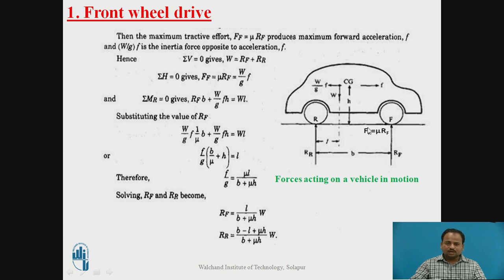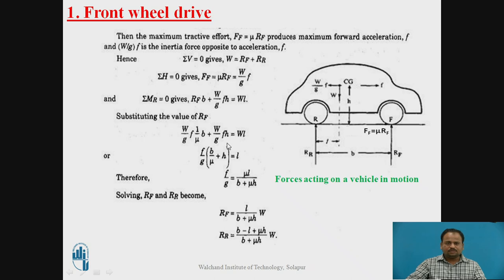As we are dealing with the front wheel, we need to take the moment about the rear wheel. Therefore, taking moment about the rear wheel: RF times B plus W by G times F times H — both in anti-clockwise direction — and W times L in the clockwise direction. Substituting the values of RF, we put the RF value into the equation and obtain an expression. Our aim is to calculate maximum acceleration, so we take maximum acceleration outside and get the F by G ratio, from which we can calculate maximum acceleration.